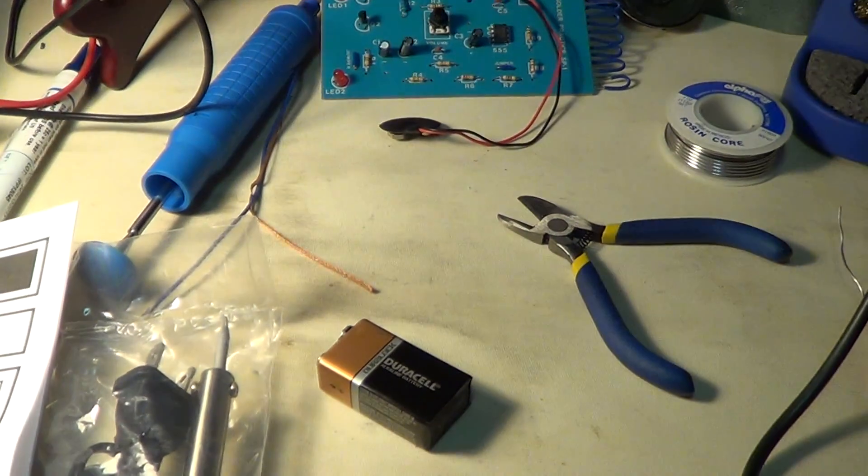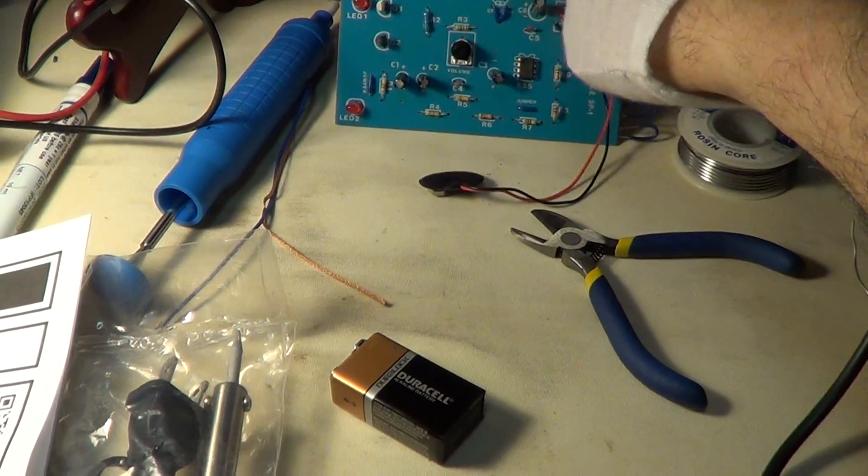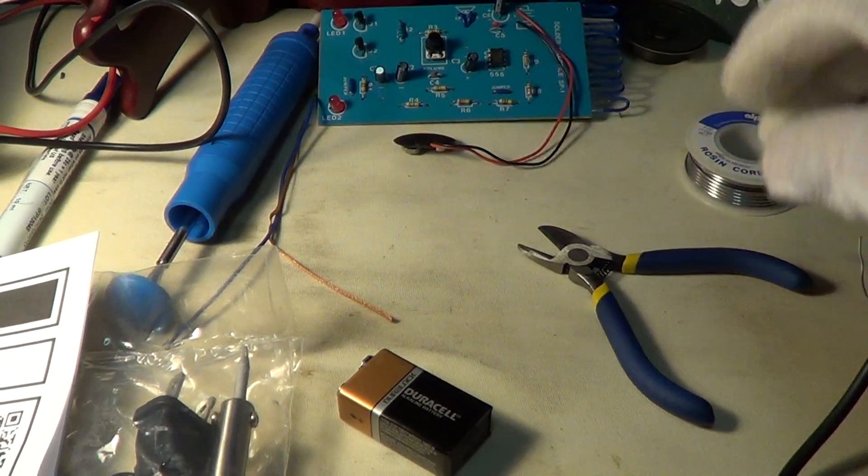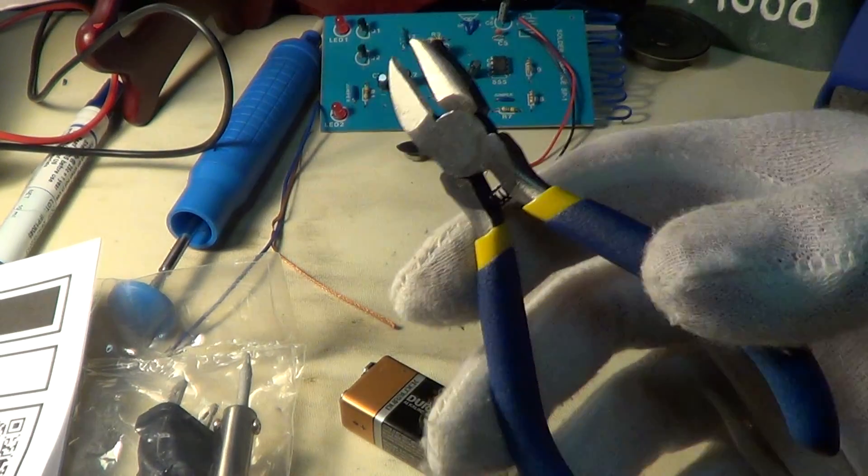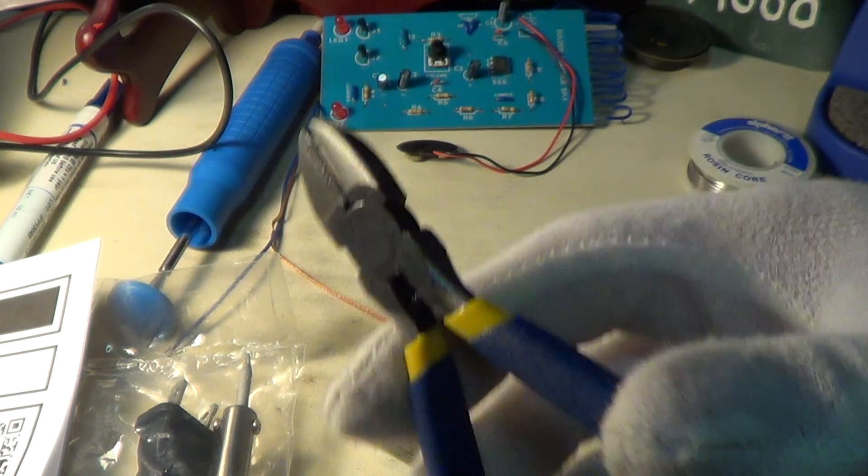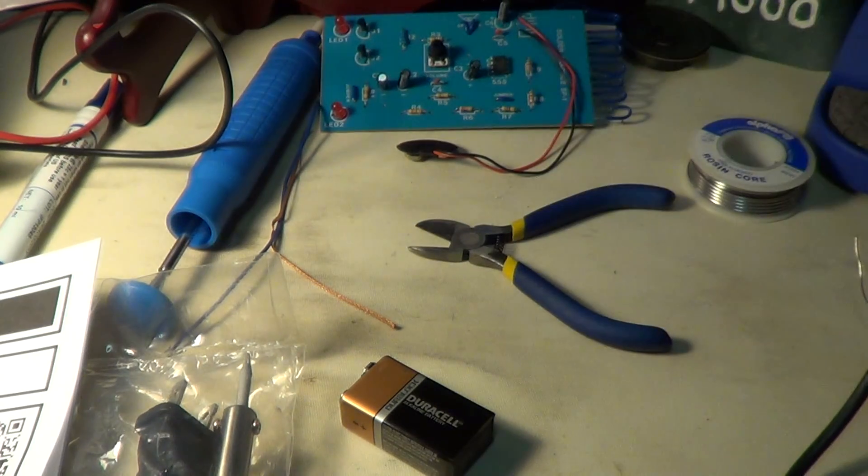Of course the board to build on and practice on comes with it. It also comes with a small pair of flush cut—they're not quite flush cut but it's a nice pair of wire cutters.